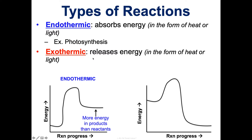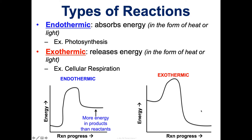Exothermic reactions release energy — think 'exiting' in the form of heat or light, so exiting heat: exothermic. This is how cellular respiration works. The overall amount of energy required to break the bonds in the reactants in cellular respiration is less than the energy released when the new bonds form in the products. Thus there's excess energy released as heat or light, making it an exothermic reaction — we start with more and end with less.